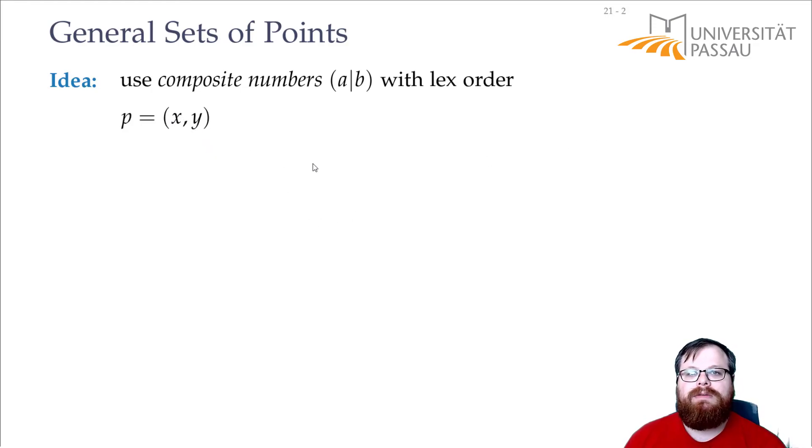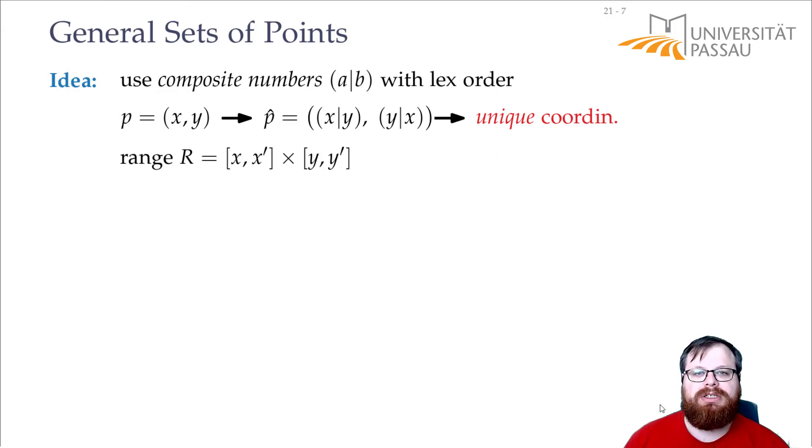So if you have a point that has x-coordinate x and y-coordinate y, what we create out of this is a point that has x-coordinate x composited with y and y-coordinate y composited with x. So now, as long as we don't have two points with the same coordinates, the coordinates we get are unique. And for the queries, we want to query all the points that lie in some rectangle. But now we have to make sure that even with the composite numbers, it works out.